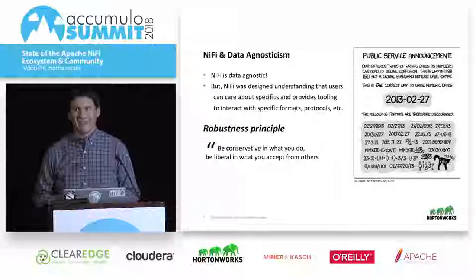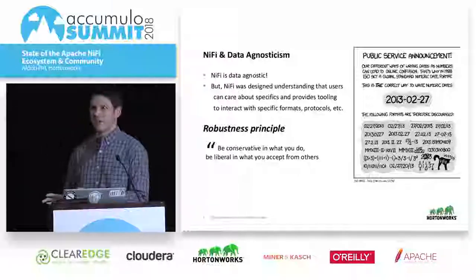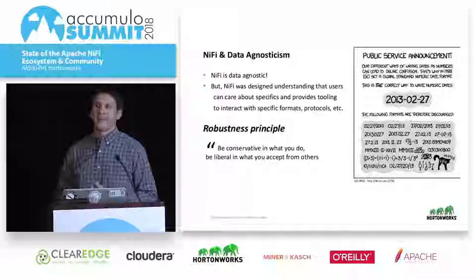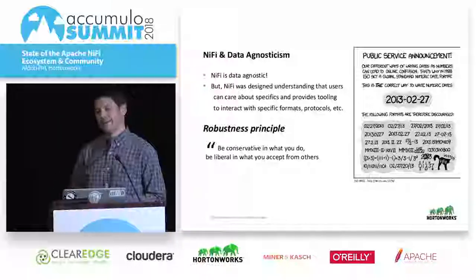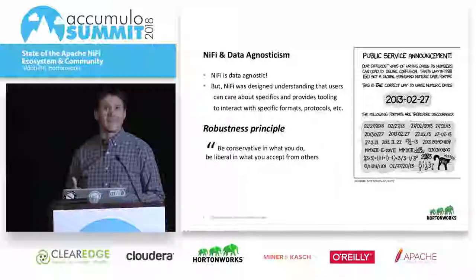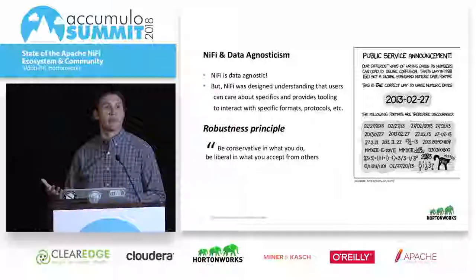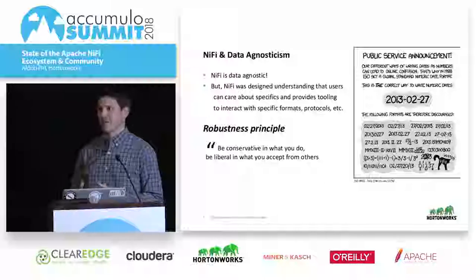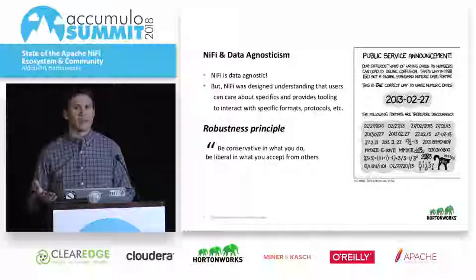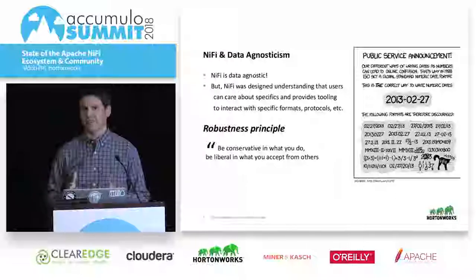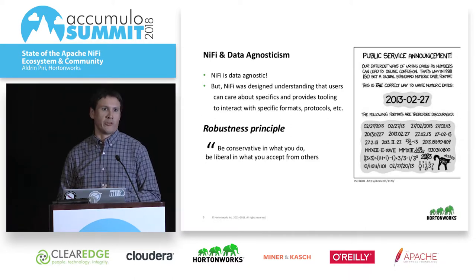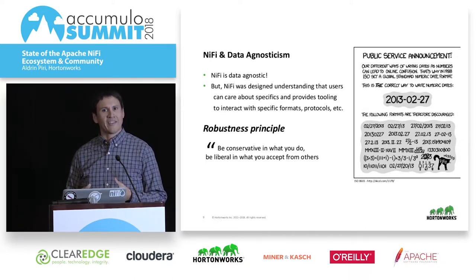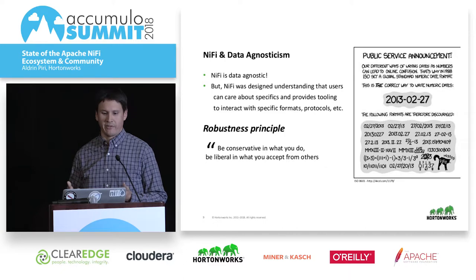NiFi is data agnostic - we don't really care what the bytes are that go through our system. There's a bit of a misnomer: the primary event or message that traverses the system is called the flow file, which makes people think we only do files. But realistically, anything we can represent in binary form we can transfer through the system. For high-level things NiFi handles in terms of routing and marking up with metadata, we don't necessarily care what that is, but we also provide the ability to analyze that content and make choices about what's happening, providing different transformations, enrichments, and things like that.